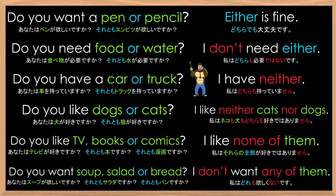Let's read that at a normal pace this time. 'Do you want a pen or pencil?' 'Either is fine.' 'Do you need food or water?' 'I don't need either.' 'Do you have a car or truck?' 'I have neither.' 'Do you like dogs or cats?' 'I like neither cats nor dogs.' 'Do you like TV, books, or comics?' 'I like none of them.' 'Do you want soup, salad, or bread?' 'I don't want any of them.'